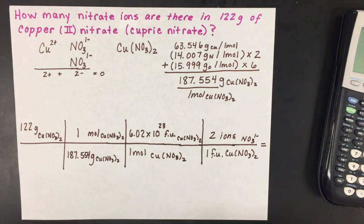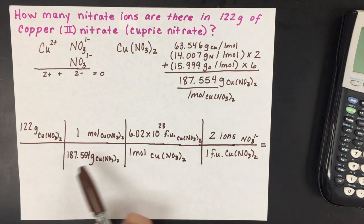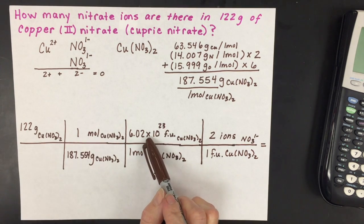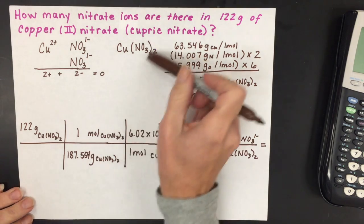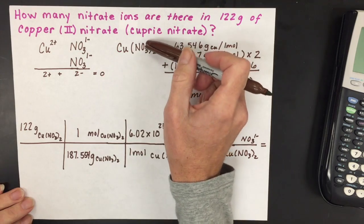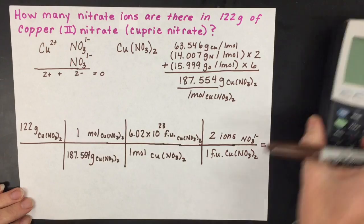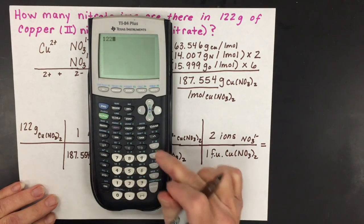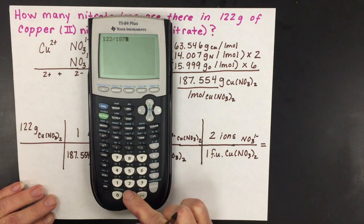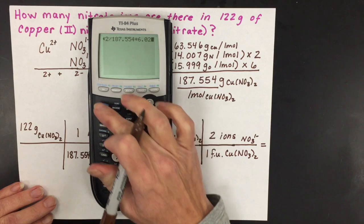When I do the calculation, I'll divide by the molar mass of copper (II) nitrate, multiply by Avogadro's number, and then multiply by 2 because for every one copper (II) nitrate unit, we get two nitrate ions. So take 122 divided by 187.554, then multiply by Avogadro's number.